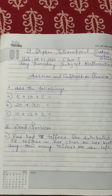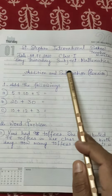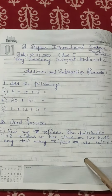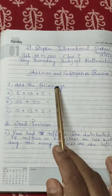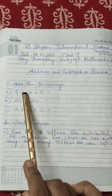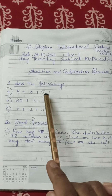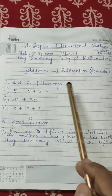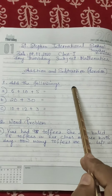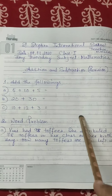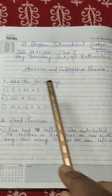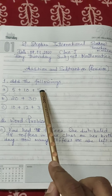Look, I have given you this exercise to do. I have told you how to add this — you will first write in 10's and 1's, then you will add it.